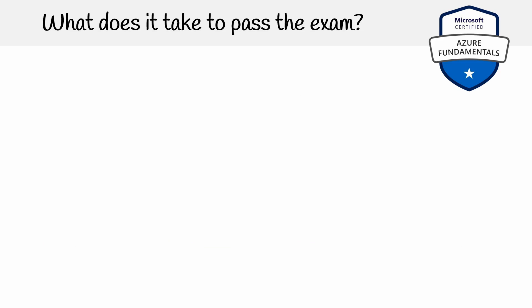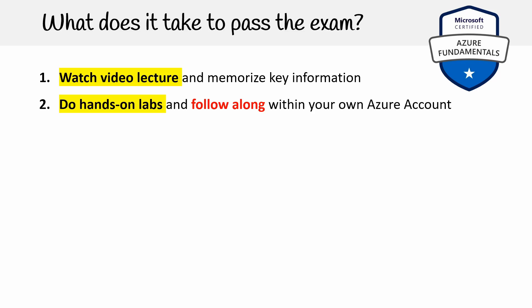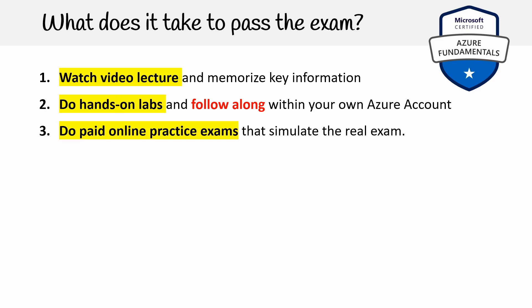What does it take to pass the exam? There are three components. First, watch the video lectures and memorize key information. Second, do hands-on labs and follow along with your own Azure account — definitely do the labs and don't just watch, as that makes a huge difference. Third, do paid online practice exams that simulate the real exam. You can pass at the Foundational level without paid practice exams, but it's much harder at the Associate and Expert level. If you do go for paid practice exams, please use ours — it supports us in producing free content.